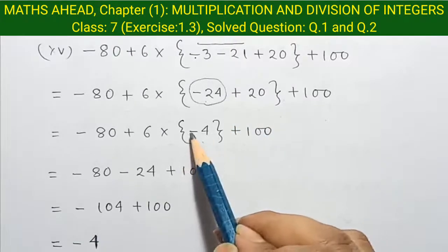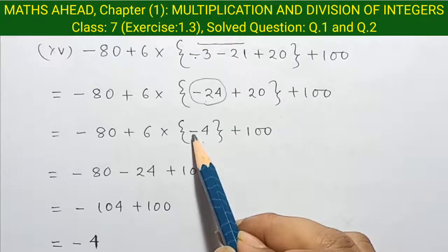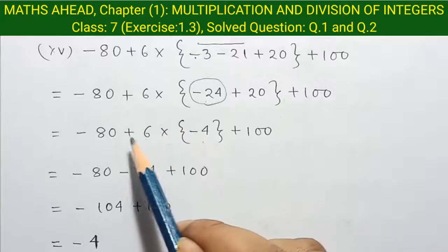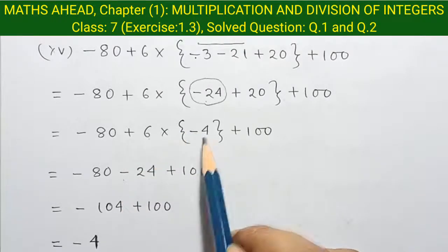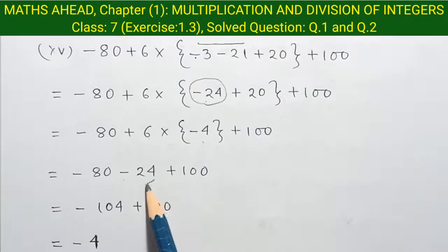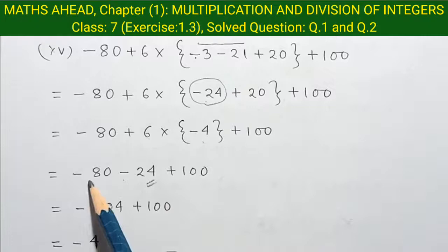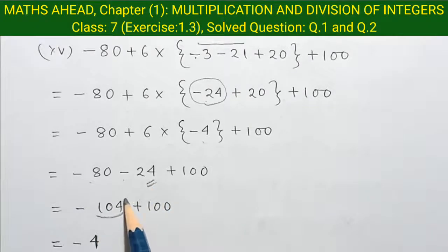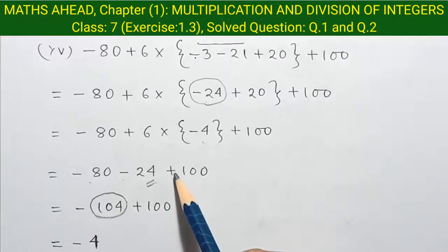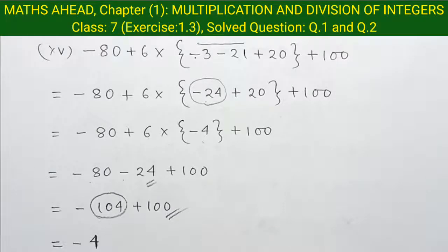Question 15: when the curly bracket opens, this minus and this plus became minus. So 6 into 4 equal to 24. So minus 80 minus 24 is equal to minus 104, and here plus 100. So finally the answer is minus 4.